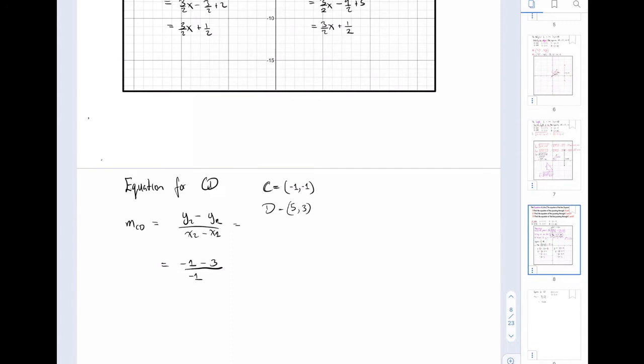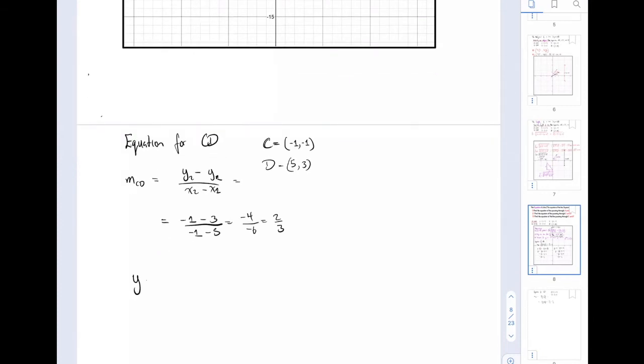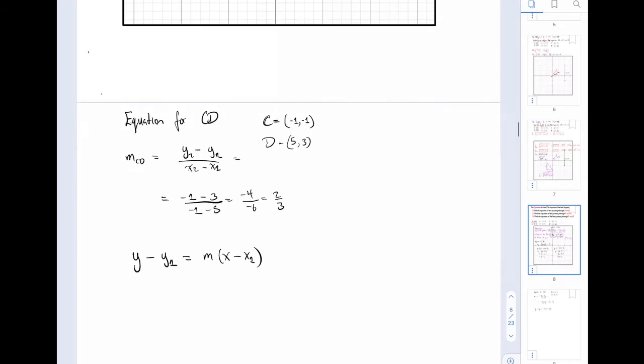If we plug in our y values, I get negative 1 minus 3 over negative 1 minus 5. This gives us negative 4 over negative 6, which equals two-thirds. Once we have our gradient, we write down y minus y1 equals m times x minus x1.